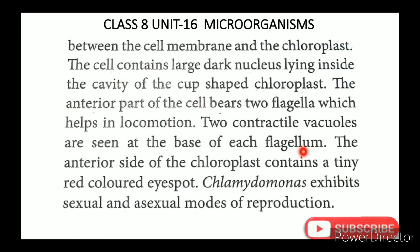Two contractile vacuoles are seen at the base of each flagellum — flagella is the plural form. The anterior side of the chloroplast contains a tiny red-colored eye spot. Chlamydomonas exhibits both sexual and asexual modes of reproduction.